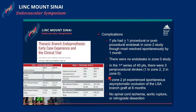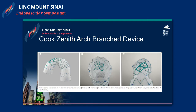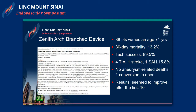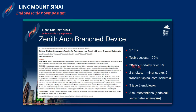The early results are favorable, though the issue is, of course, stroke rate. This is the Cook Zenith dual arch branch device — now we're moving to dual arch. This device is designed to branch into the innominate and the carotid, and it can be coupled with a carotid-subclavian bypass to treat the arch. Stroke rates are significant: in one study, four TIAs, one stroke, one subarachnoid hemorrhage. A more recent series showed improved results with a lower stroke rate and improved 30-day mortality. There's definitely a learning curve with these devices.